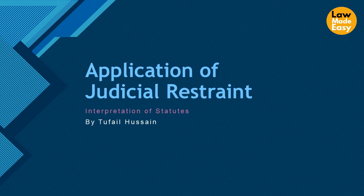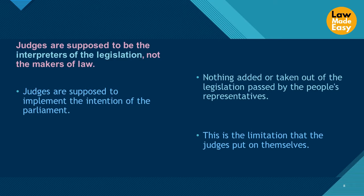The laws are made for the public and are supposed to contain words and terms understandable by the general public. There is another reason for the literal rule — it comes under the heading of judicial restraint. The judges are supposed to be interpreters of legislation, not makers of law. They are only interpreters of legislation and are supposed to implement the intention of Parliament. They need to make sure they do not add or take anything away from legislation passed by the people's representatives. This is the limitation judges put on themselves to keep their role limited to interpreting the law.